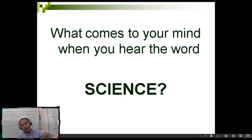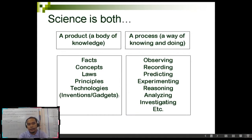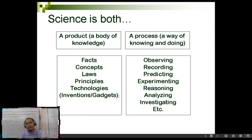That is the definition of science by Webster's dictionary. But beyond that definition, we can say that science is both a product and a process. Science becomes a product when it becomes a body of knowledge — about laws, theories, facts, and concepts.